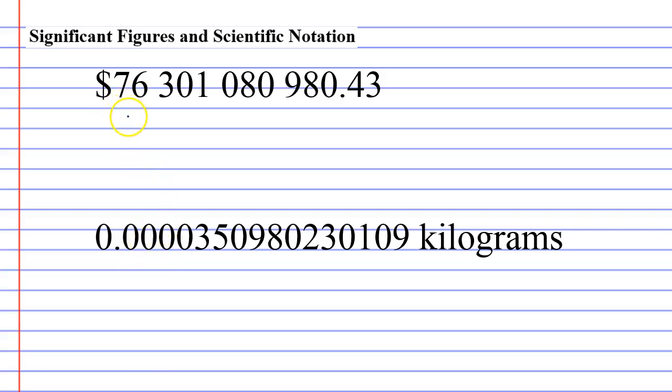So imagine I'm super rich and I own $76,301,080,980.43. Now if I was the media and I was advertising how much money this rich person has, they would not bother reading out the whole number. What they would do is they would simplify it and they might go, all right, let's just take the seven and six, make the rest into zeros, we won't worry about anything after the decimal point, and we'll just say that this guy, this rich guy, has $76 billion dollars. That's enough, we don't need to read all the numbers.